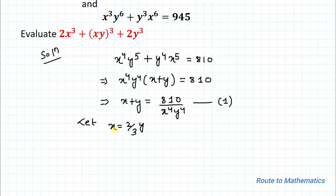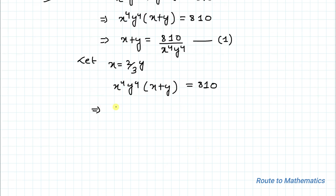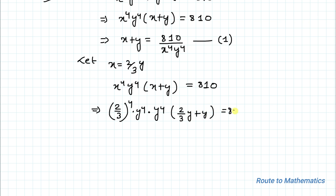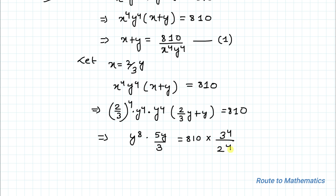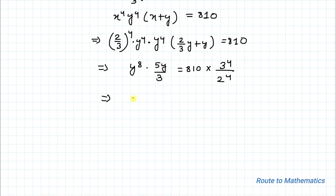Let's substitute x = (2/3)y into equation 1: x⁴y⁴(x + y) = 810. Substituting, we get (2/3)⁴ · y⁴ · y⁴ · ((2/3)y + y) = 810. So y⁸ · (16/81) · (5y/3) = 810, which gives y⁹ · (80/243) = 810.